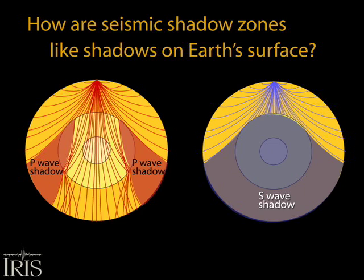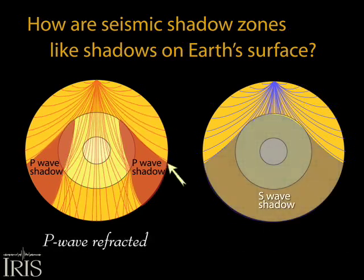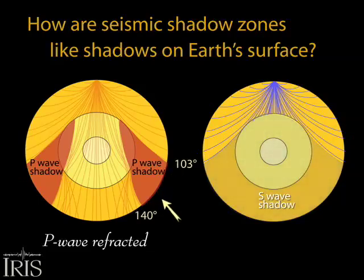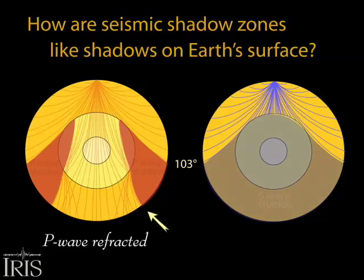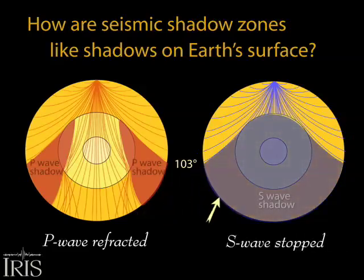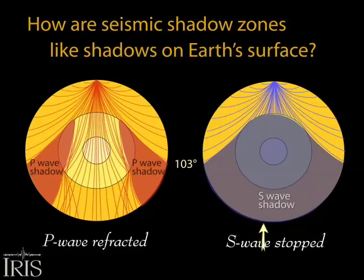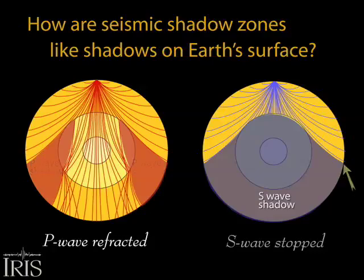A seismic shadow zone is an area that does not receive direct body waves. The P wave shadow extends from angular distances of about 103 to 140 degrees from an earthquake due to refraction at the core-mantle boundary. The S wave shadow, which results from S waves being stopped entirely by the liquid core, extends from 103 degrees.